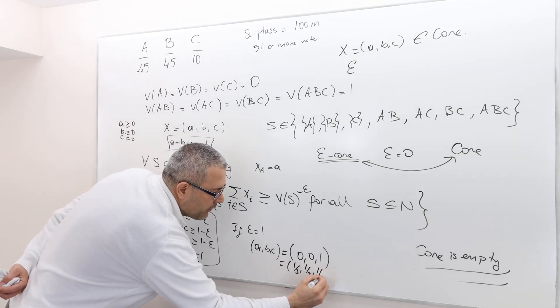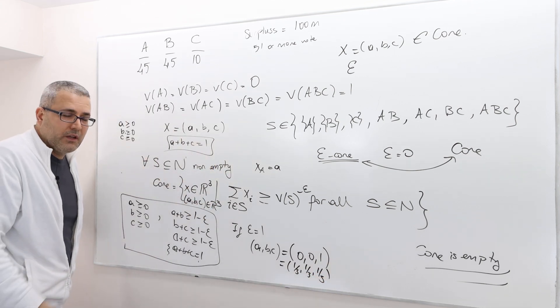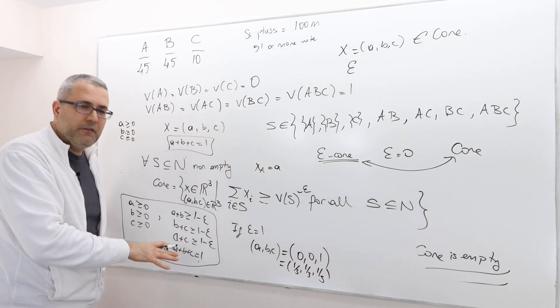What else? 1 third, 1 third, 1 third. That's also in epsilon core. So in fact, there's a lot of epsilon core payoff vectors.